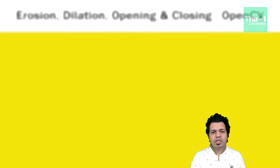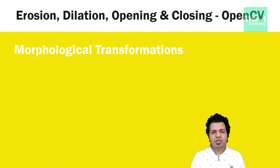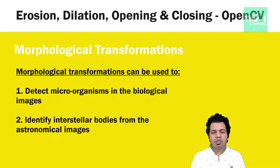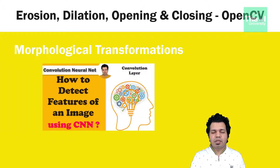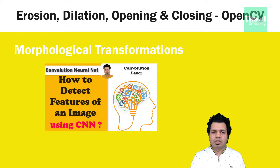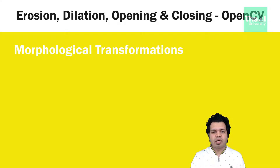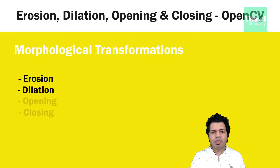Morphological transformations are image-based operations which are normally performed on binary images. They require two inputs: the original image and a kernel, a concept I already explained in previous videos — you can click the 'i' button above to watch that if you're jumping directly to this video. The kernel decides the nature of the operation. The two basic morphological operators are erosion and dilation, and we also have variations such as opening and closing.